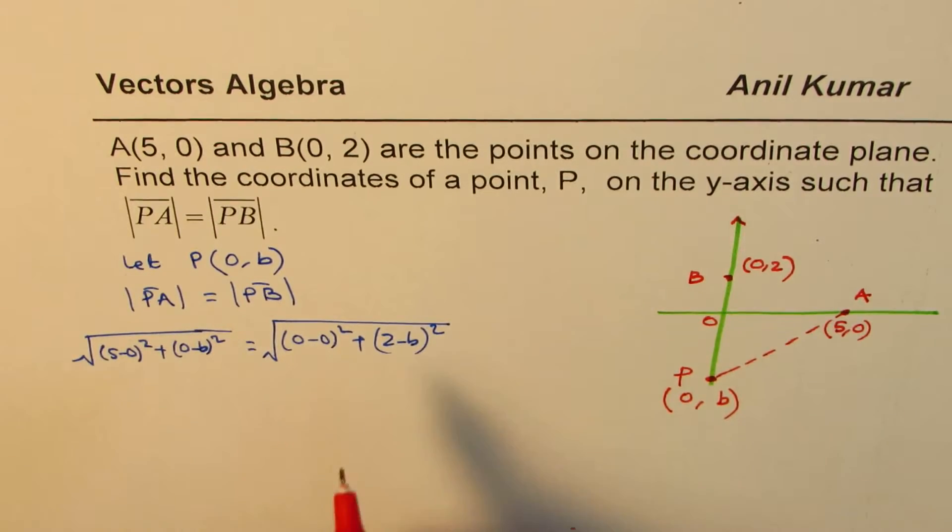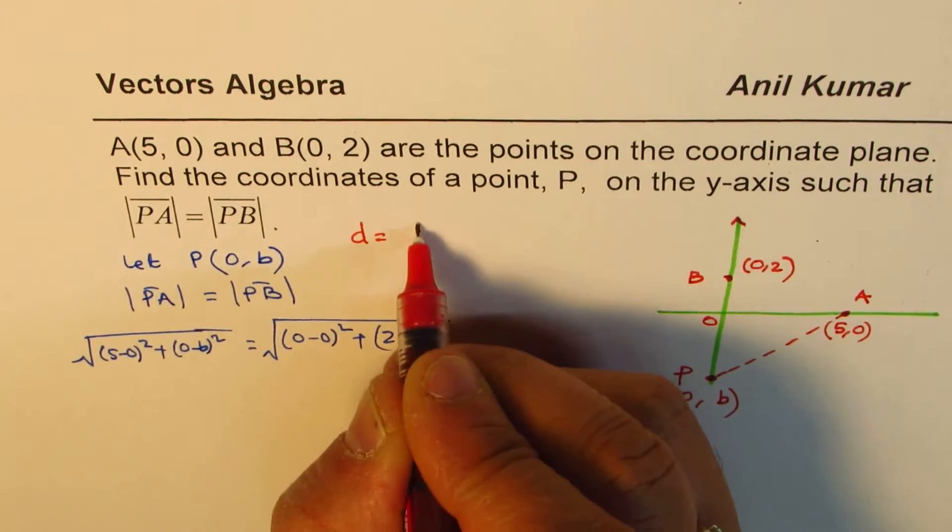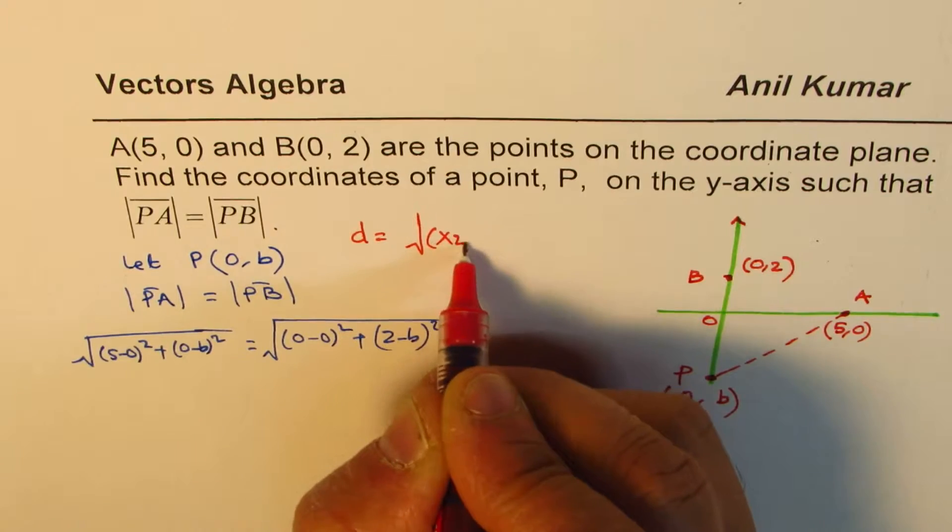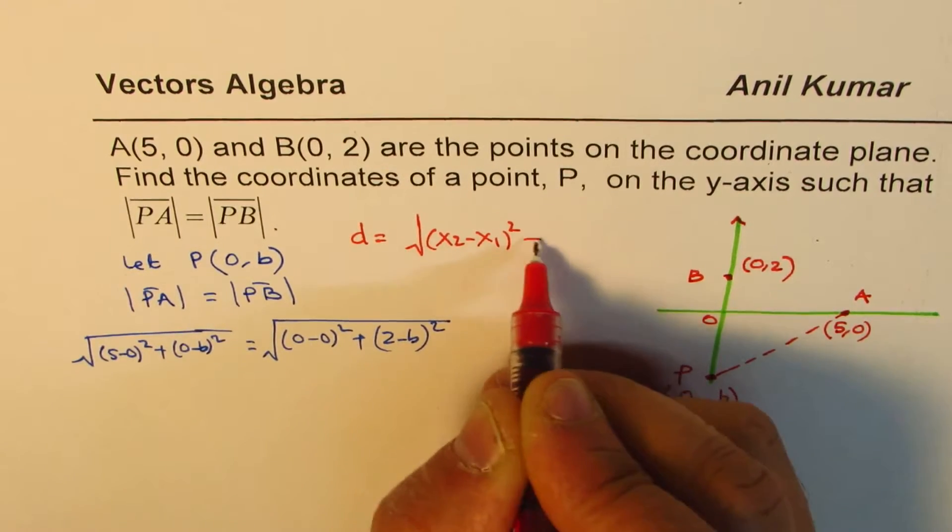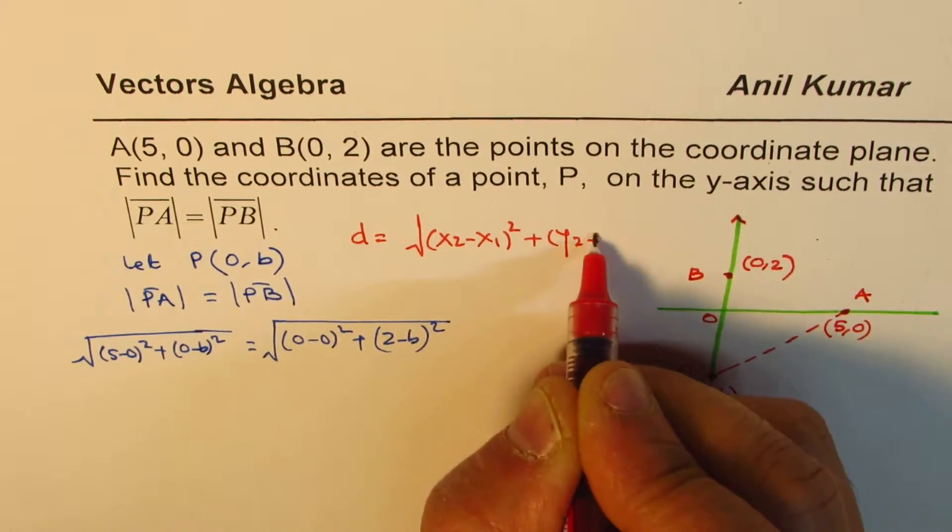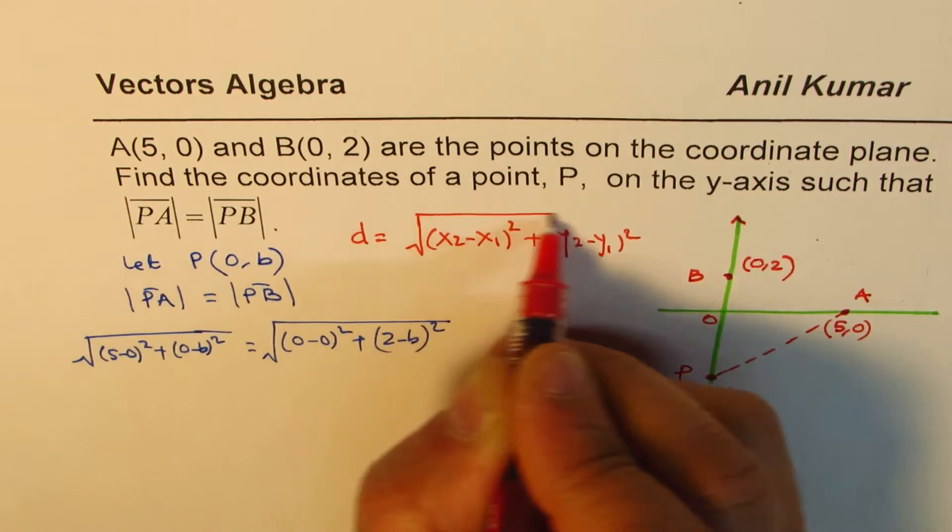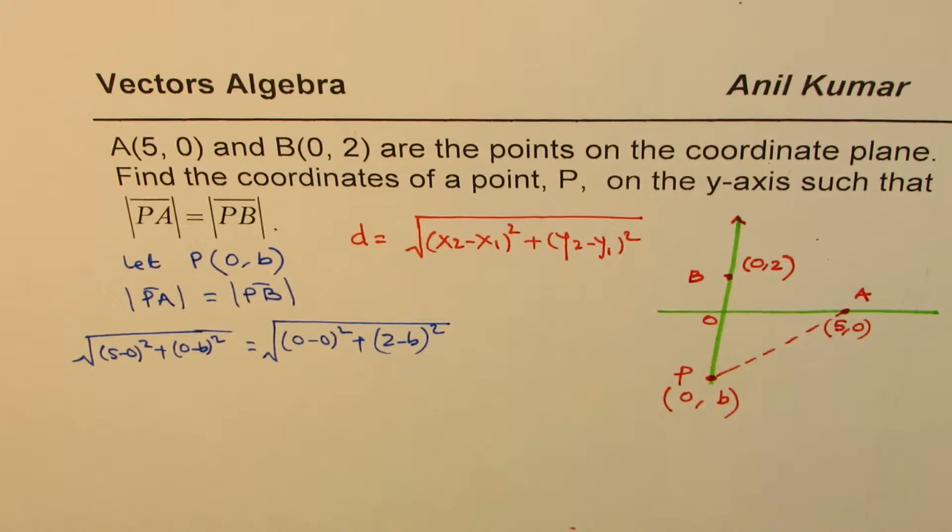That's PA equals PB. So we have basically applied the distance formula here, which is √[(x₂-x₁)² + (y₂-y₁)²].